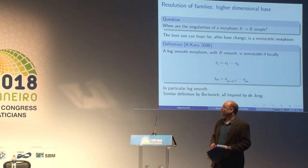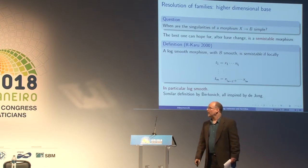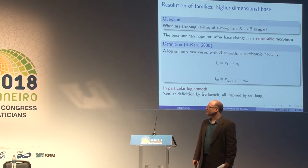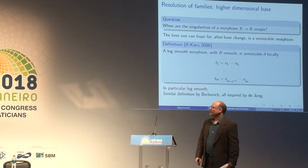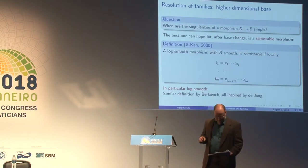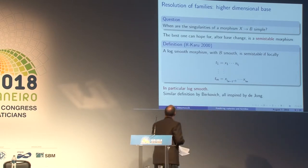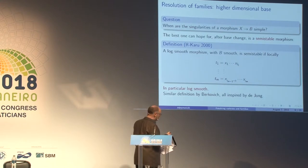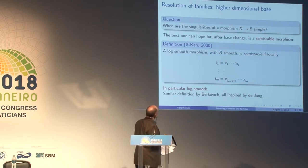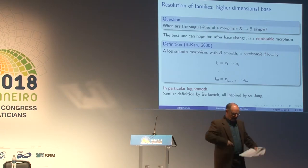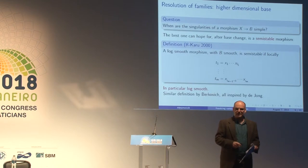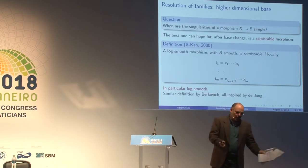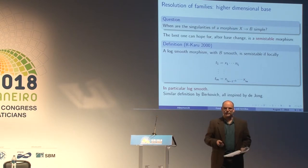When are the singularities of a morphism simple? There's a very nice result in Karu's thesis showing that the best one can hope for is a semi-stable morphism. The definition appears in a paper with Karu in 2000: a log-smooth morphism where the base is smooth is semi-stable if locally each variable is a reduced monomial, and these monomials are relatively prime — in other words, this is a product of several one-parameter families with semi-stable degeneration.